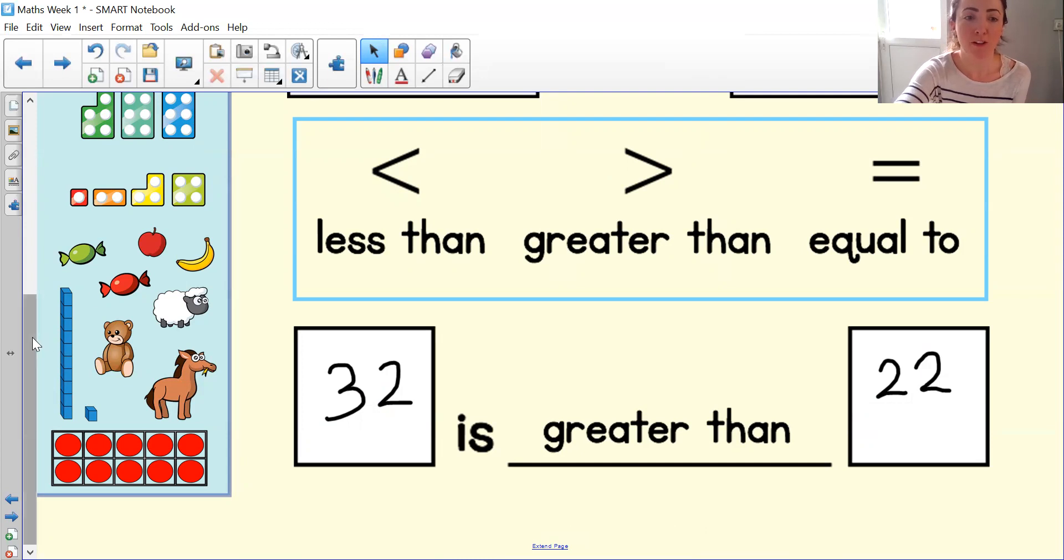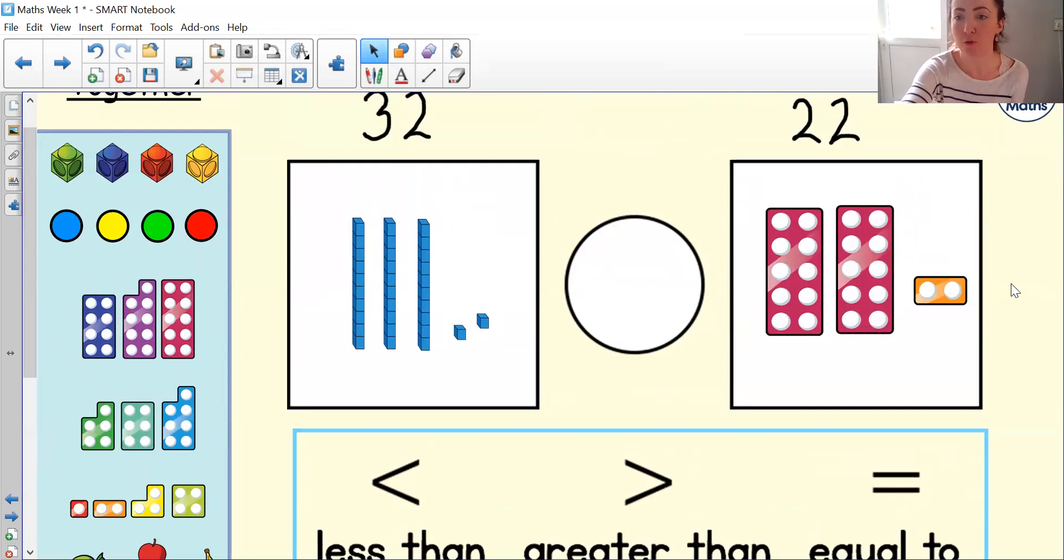Although the ones are the same in 32 and 22, they both have two ones, 32 has three tens and 22 only has two tens. So 32 is greater than 22. Which symbol are we going to use to represent 32 being greater than 22? Pause again to choose the symbol. Did you choose this symbol? Amazing. If you're still struggling with the inequality symbols, just remember that the crocodile always eats the bigger number. Imagine that inequality symbol as being the crocodile's mouth and it's eating the greater number.